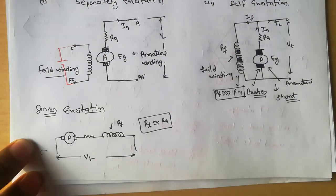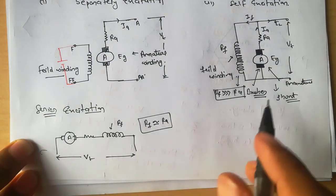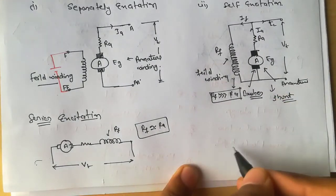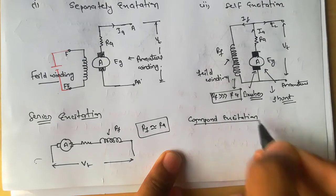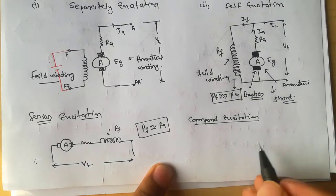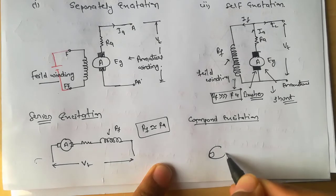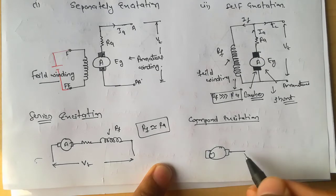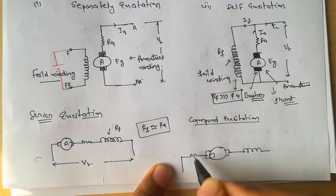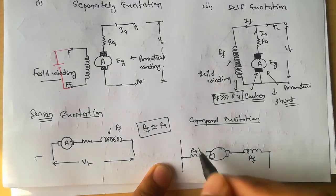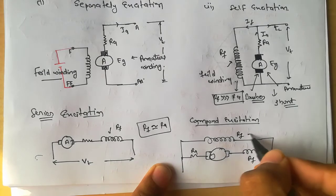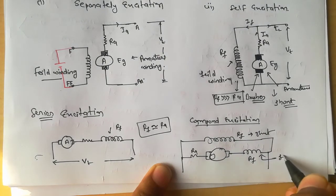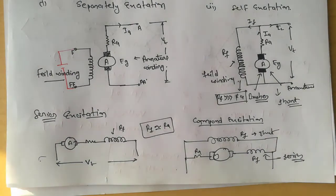We also have compound excitation, which combines both series and shunt excitation. The armature is connected with a series field winding (Rf series) in series, and a shunt field winding (Rf shunt) in parallel. This arrangement — with both series and shunt field windings — is called compound excitation.